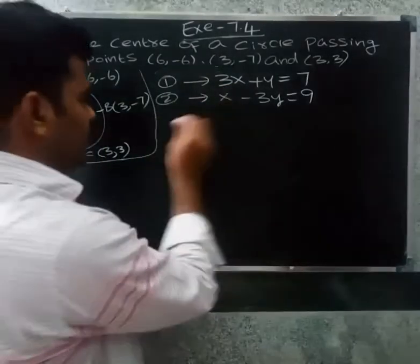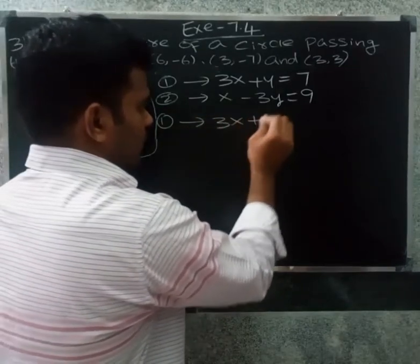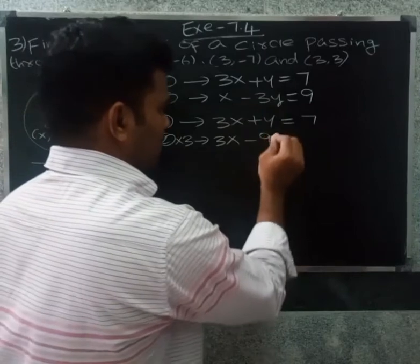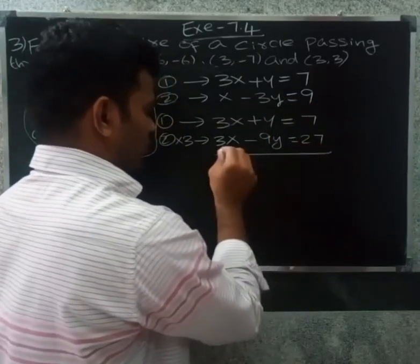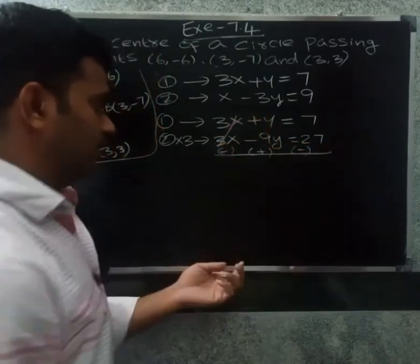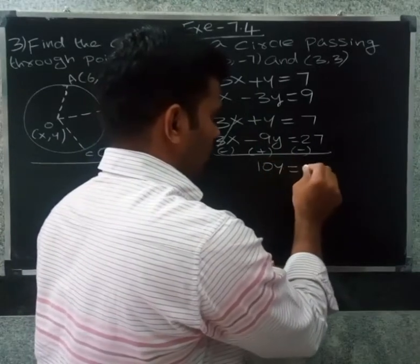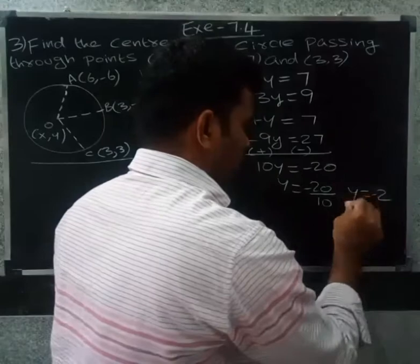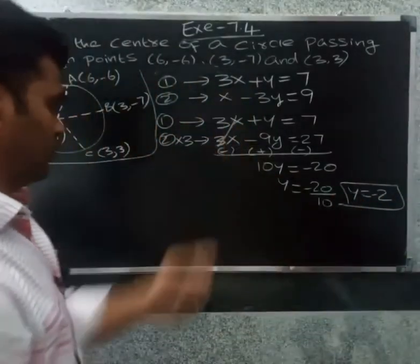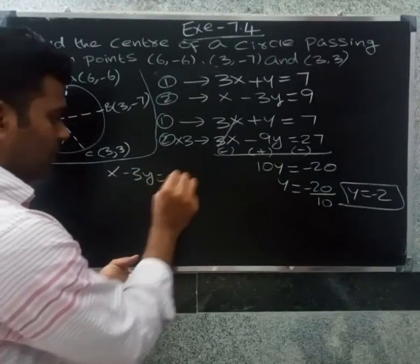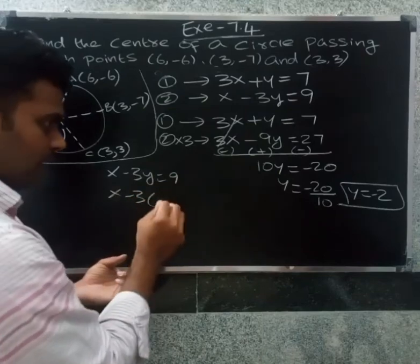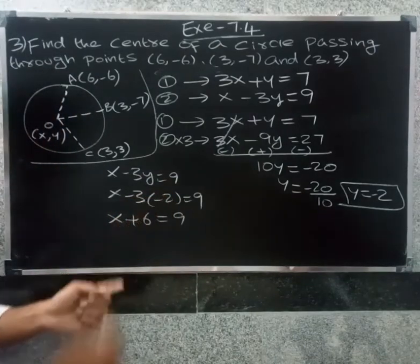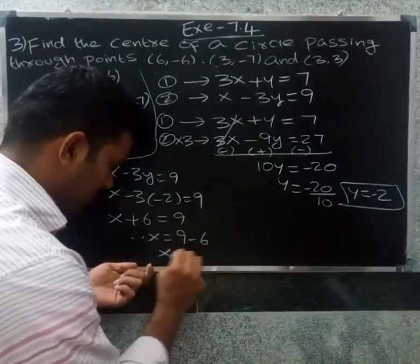Now solving using the elimination method. First equation: 3x plus y equal to 7. Multiply the second equation by 3: 3x minus 9y equal to 27. Subtracting, 9 plus 1 gives 10y equal to minus 20, so y equal to minus 2. Substituting y equal to minus 2 into x minus 3y equal to 9: x plus 6 equal to 9, so x equal to 3.